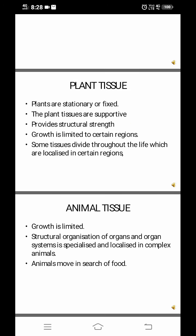Plants are stationary, as you all know, or they remain fixed. So the plant tissues are supportive — they provide structural strength. Plants have to tolerate unfavorable climatic conditions like wind, scorching heat, too cold weather. So the tissue should provide structural strength to the plants.